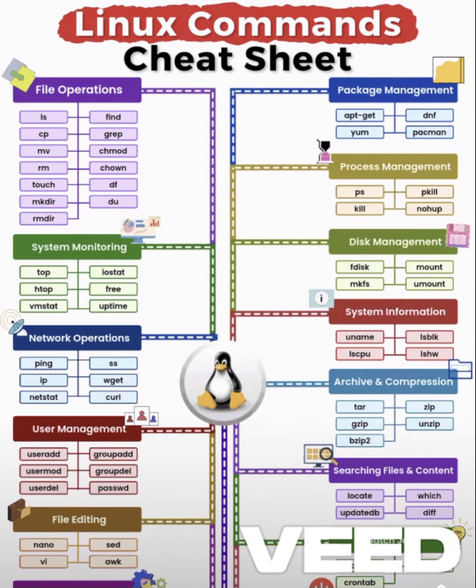Networking Commands — the lifeline of DevOps. ping checks connectivity, ip shows your network details, get and curl help download or send data from the web, and netstat or ss show your open ports and connections.